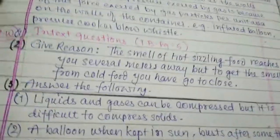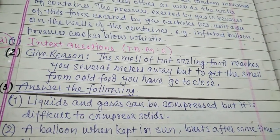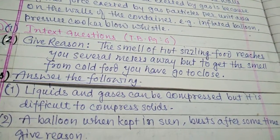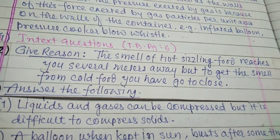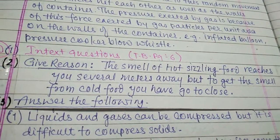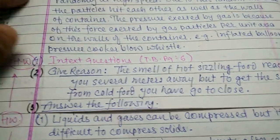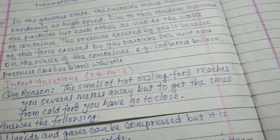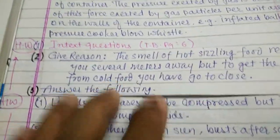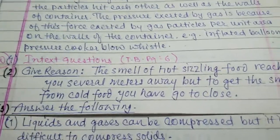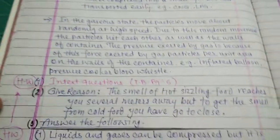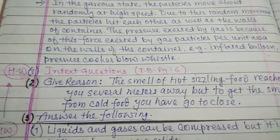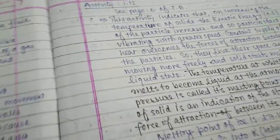Now for homework: the smell of hot sizzling food reaches us several meters away, but to get the smell from cold food you have to go close to it. Hot sizzling food can be detected from many meters away by its smell, but when the food cools down, you have to go near it to smell it. We have now discussed these three states.